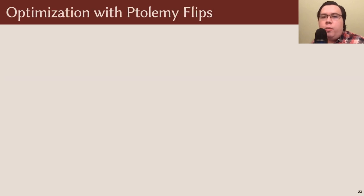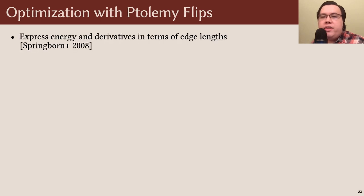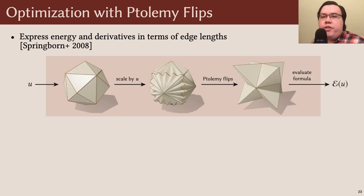With Ptolemy flips in our toolbox, optimization becomes fairly straightforward. We have formulas for our energy and its gradient in Hessian in terms of the edge lengths of a mesh. Whenever we want to evaluate this energy or its derivatives at a particular scale factor u, we simply scale our original edge lengths by u, obtaining a set of possibly invalid Euclidean lengths. We then flip to Delaunay using Ptolemy flips anyway and evaluate the desired formula. This defines a twice continuously differentiable energy which we can hand off to any optimization algorithm.